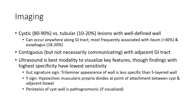Imaging characteristics: cystic lesions account for around 80 to 90%, with tubular forms in 10 to 20%. These lesions have a well-defined wall and can occur anywhere along the GI tract, most frequently associated with the ileum at more than 30%, and the esophagus and stomach at 18 to 20%. They are contiguous but not necessarily communicating with the adjacent GI tract. Ultrasound is the best modality to visualize key features, though findings with higher specificity have lower sensitivity.